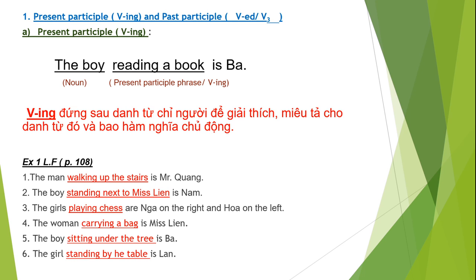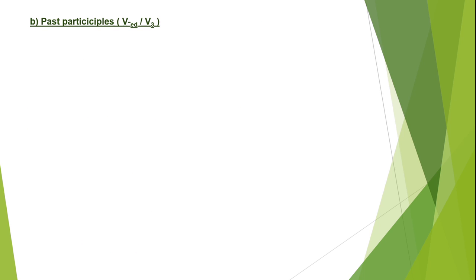Các bạn sẽ làm thêm cho cô những nhân vật còn lại nhé. Bây giờ cô sẽ qua phần tiếp theo đó là past participle, còn gọi là verb -ed hoặc verb 3.